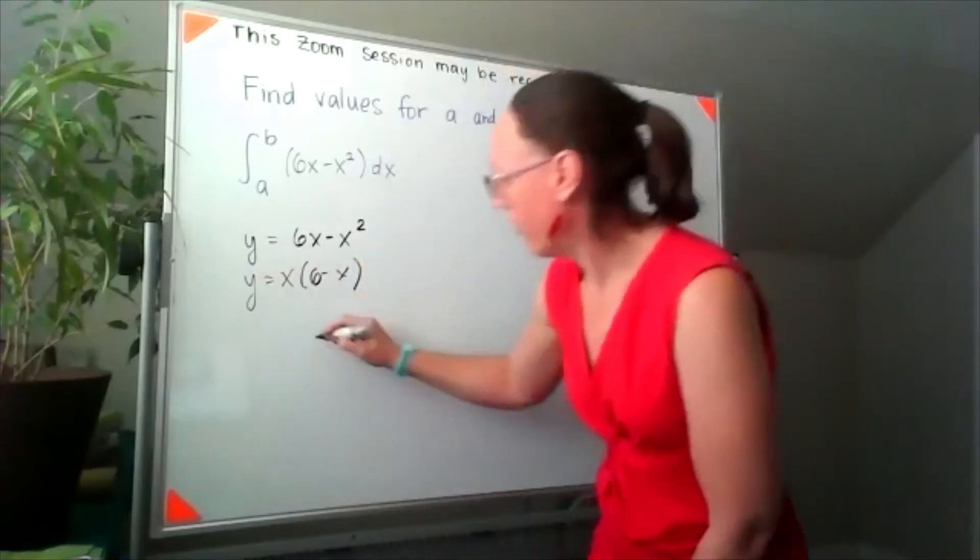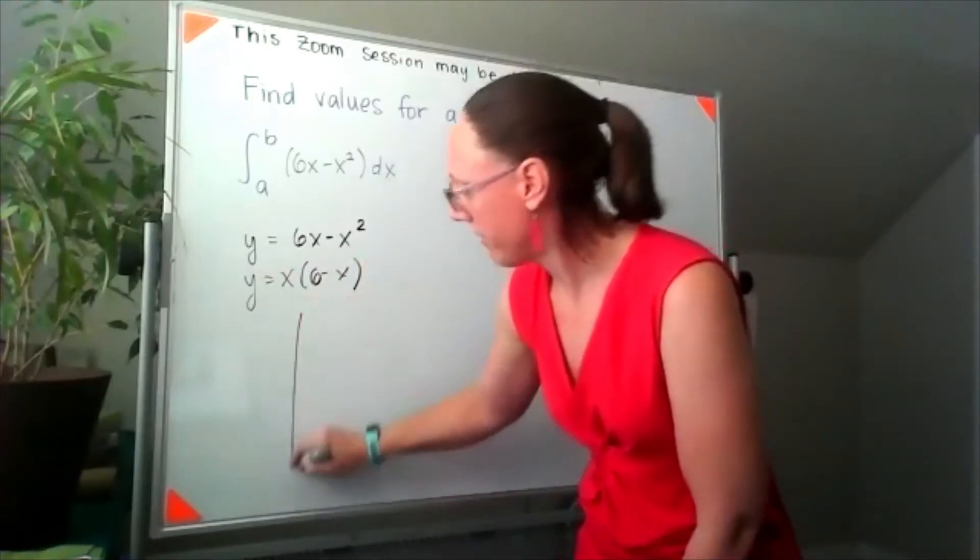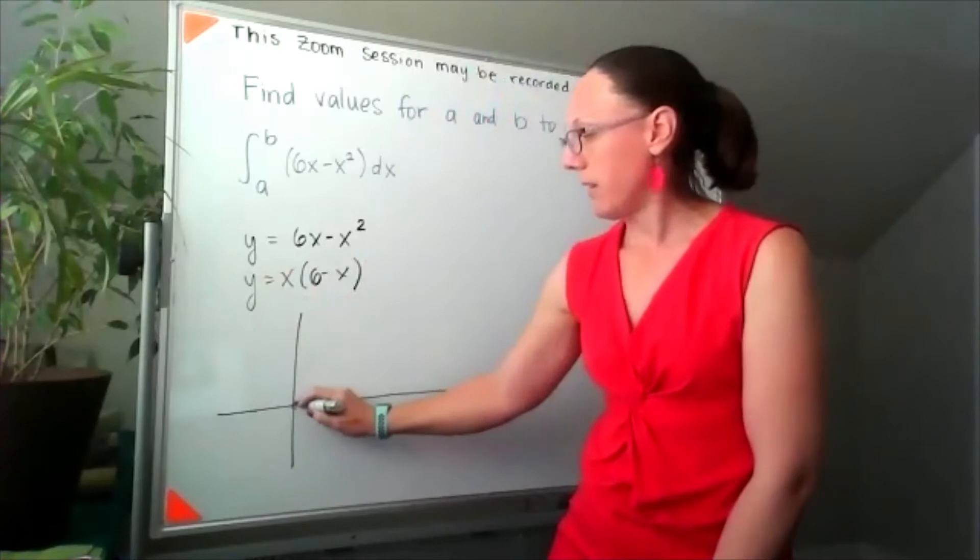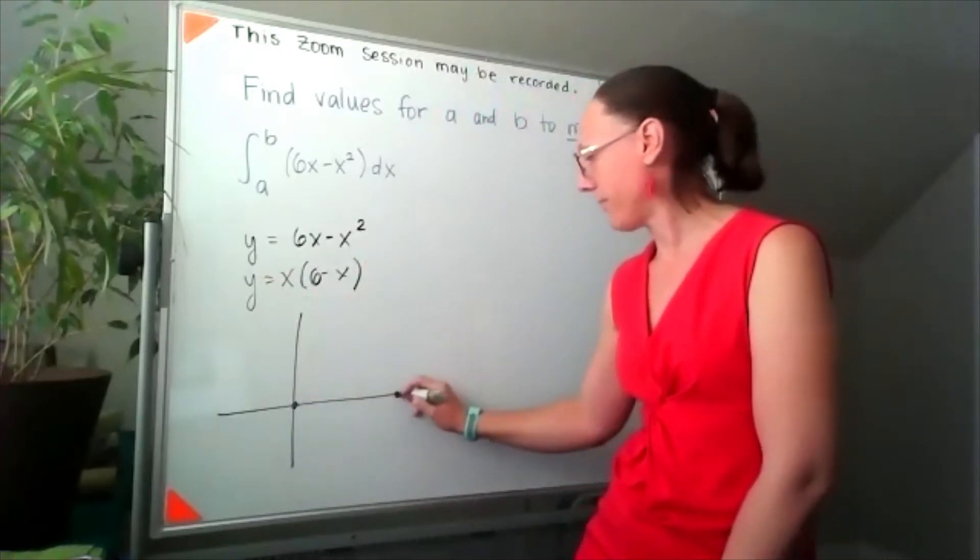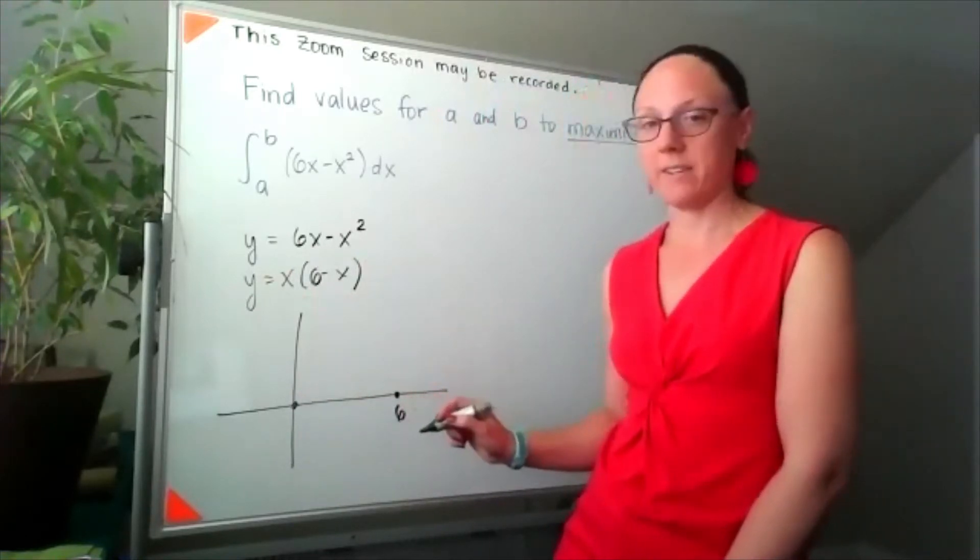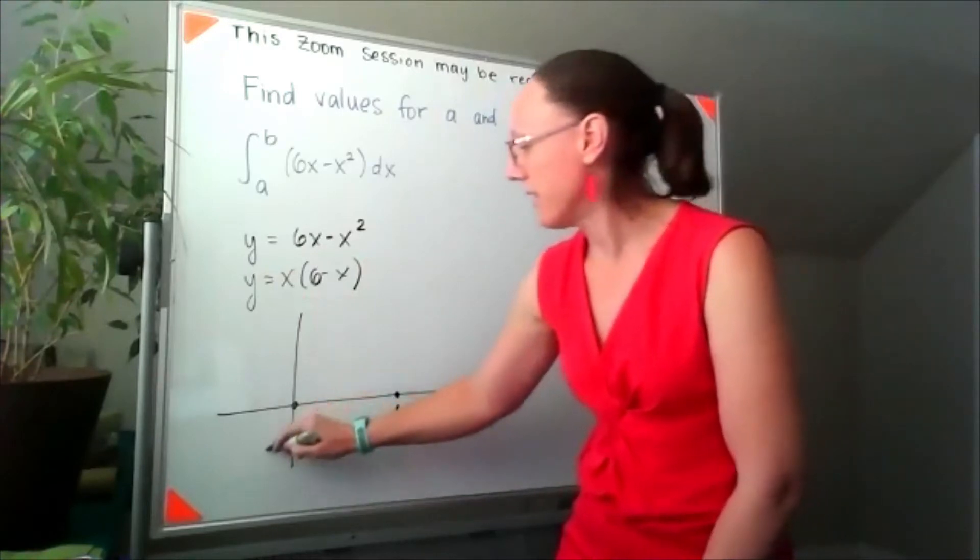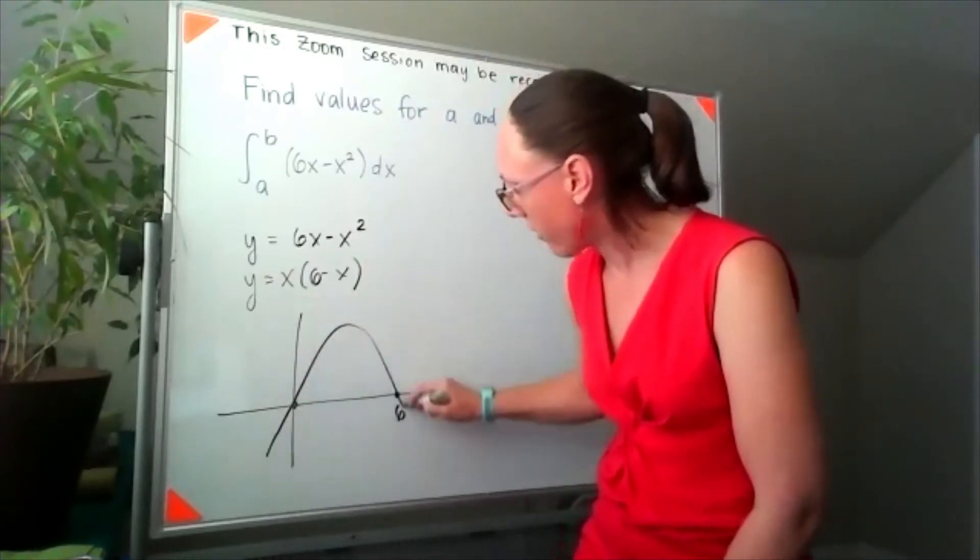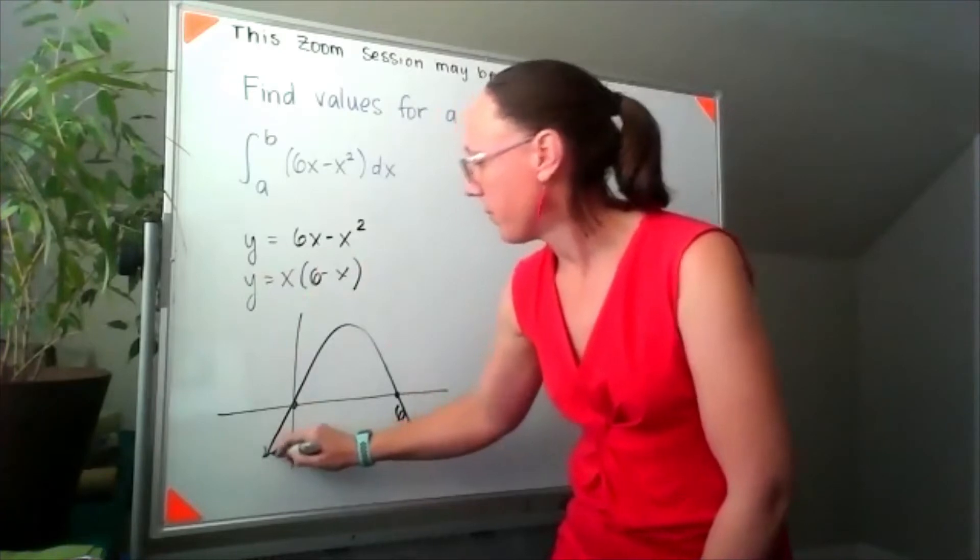I now know that my graph has a zero at 0 and a zero at 6, and that it's a concave down parabola.